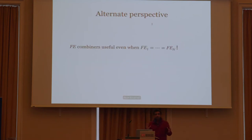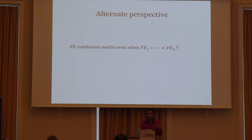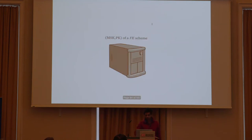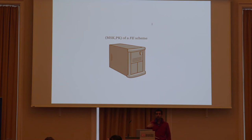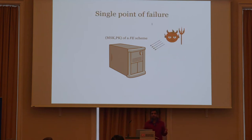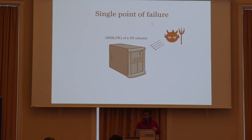An alternate perspective is that FE combiners are even useful if all the original candidates are the same. For example, suppose you have a server that has the master secret key and public key of an FE scheme. Whenever you want a functional key issued, you talk to the server and it gives you the functional key. The disadvantage is that there is a single point of failure — if the adversary corrupts the server, he can learn the master secret key and decrypt all ciphertexts.